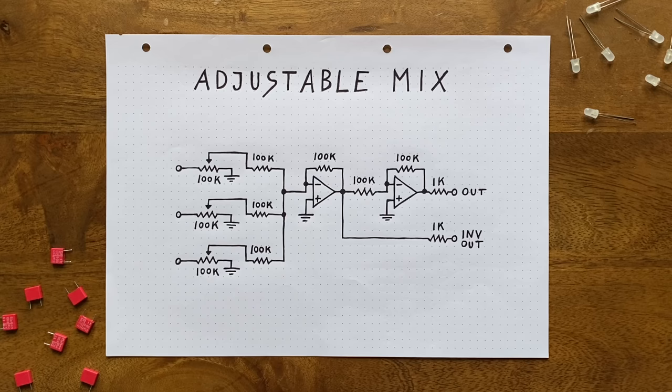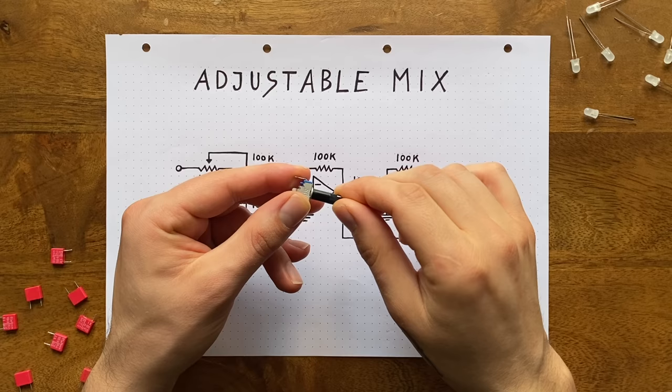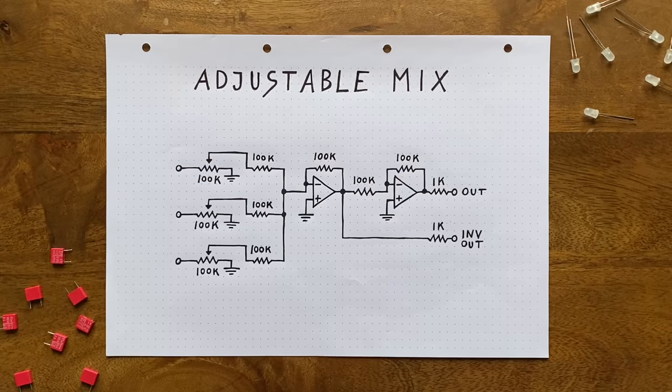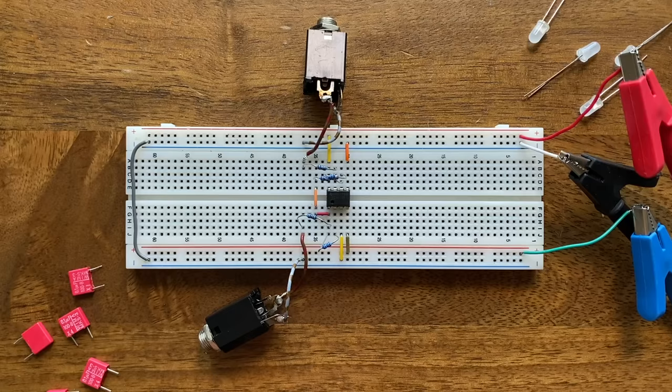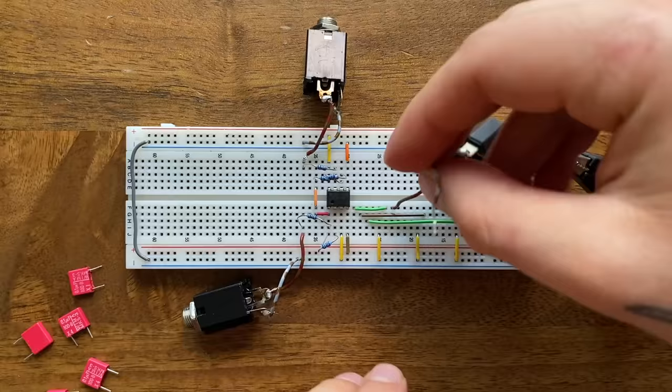Conveniently, a potentiometer is basically a voltage divider as a standalone component, where you can change the resistance relation by turning a knob. This way, we're able to adjust the signal's volumes to any level between 100% and 0%. To test this, I'll simply set up three potentiometers, connect one side to the respective input socket, the other to ground, and the center pin goes straight into our mixer.